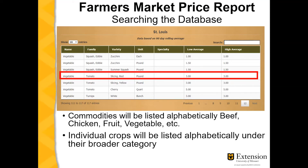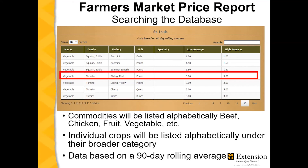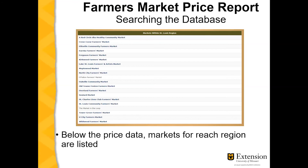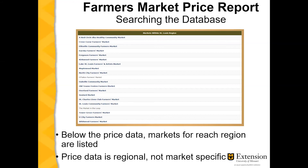You will see a low average as well as a high average price listed on the price report. This data is based on a 90-day rolling average of prices reported. Below the price data, the markets for each region are listed. The price data is regional and not market specific.